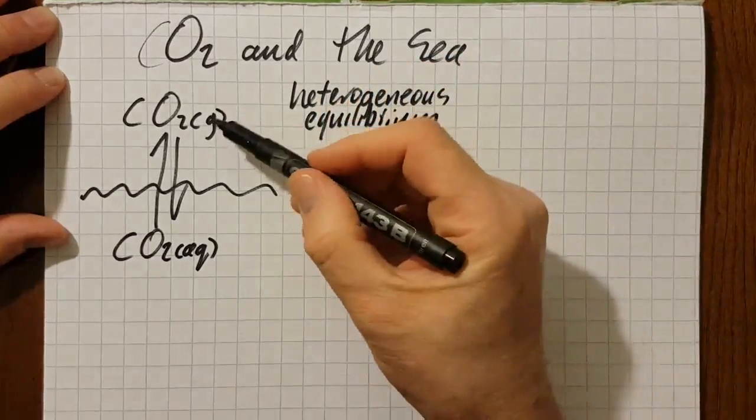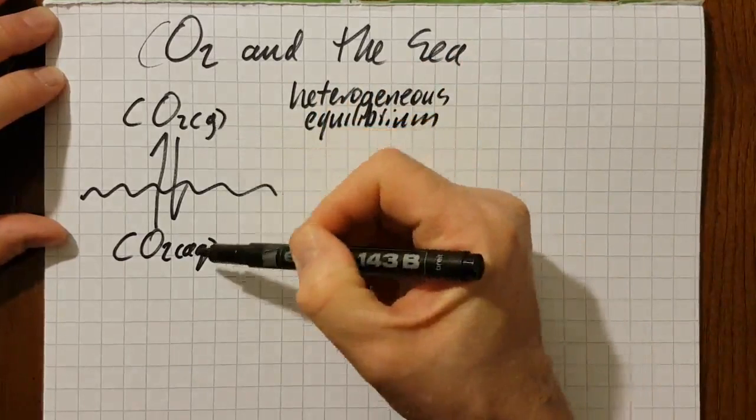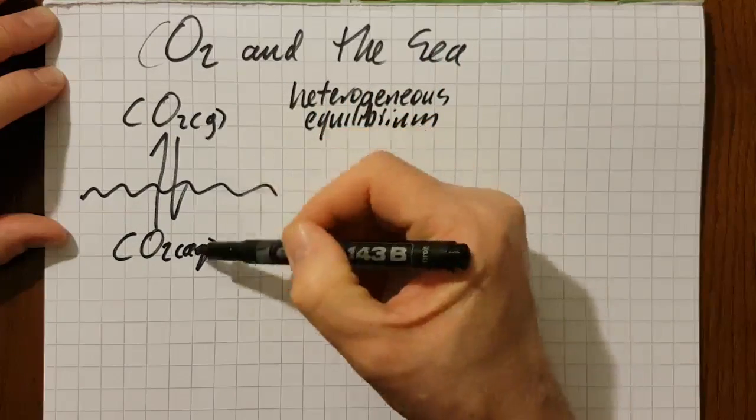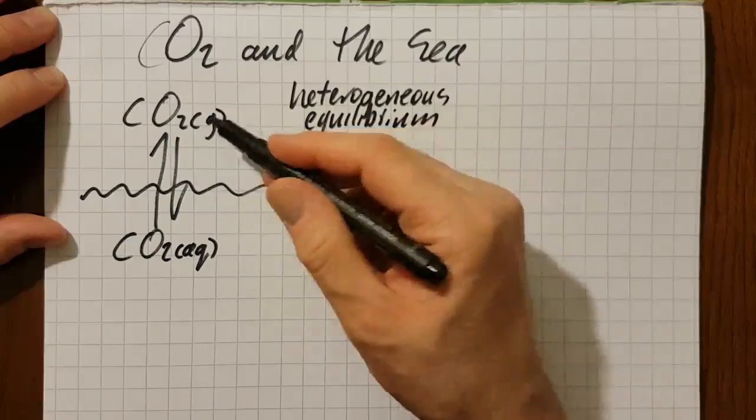Heterogeneous means that the phases of the products and the reactants are different. Homogeneous would mean they're the same.